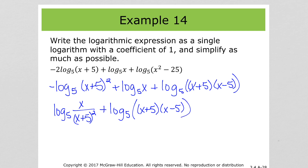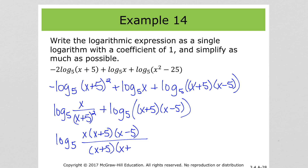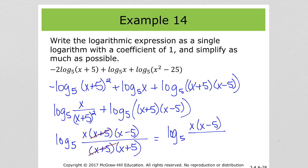Since we're adding, we multiply: log base 5 of [x times (x plus 5)(x minus 5)] over (x plus 5)(x plus 5). Writing out (x plus 5) squared as (x plus 5)(x plus 5), one factor of (x plus 5) cancels, and we end up with log base 5 of (x times (x minus 5)) over (x plus 5).